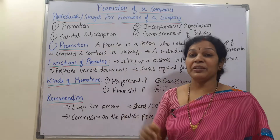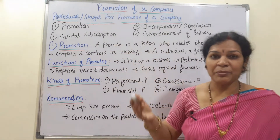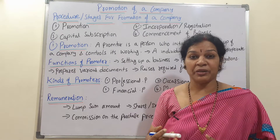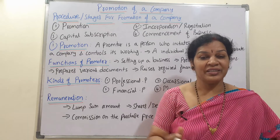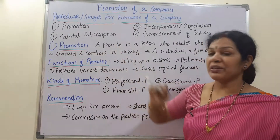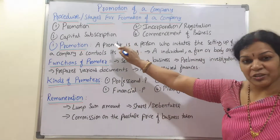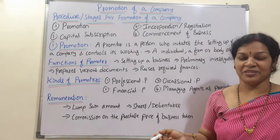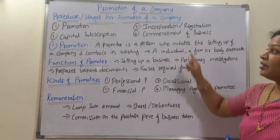In the third stage, capital subscription — once company registration is over, we need to handle the finance. How much capital is required and from where we are getting it — all these financial aspects are discussed in capital subscription and capital accumulation. Once capital is accumulated, then comes the fourth stage: commencement of business, where you can actually start the business.